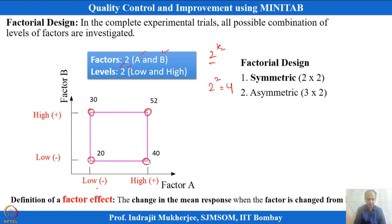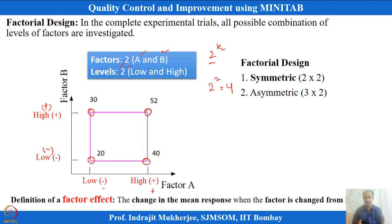The levels are indicated by indicator variables: minus 1 for low level and plus 1 for high level. This is the standard notation in experimentation, though other symbols can be used. This is an orthogonal design — the columns are independent of each other. Factor A and B are continuous variables, with positive representing the higher side and negative the lower side.